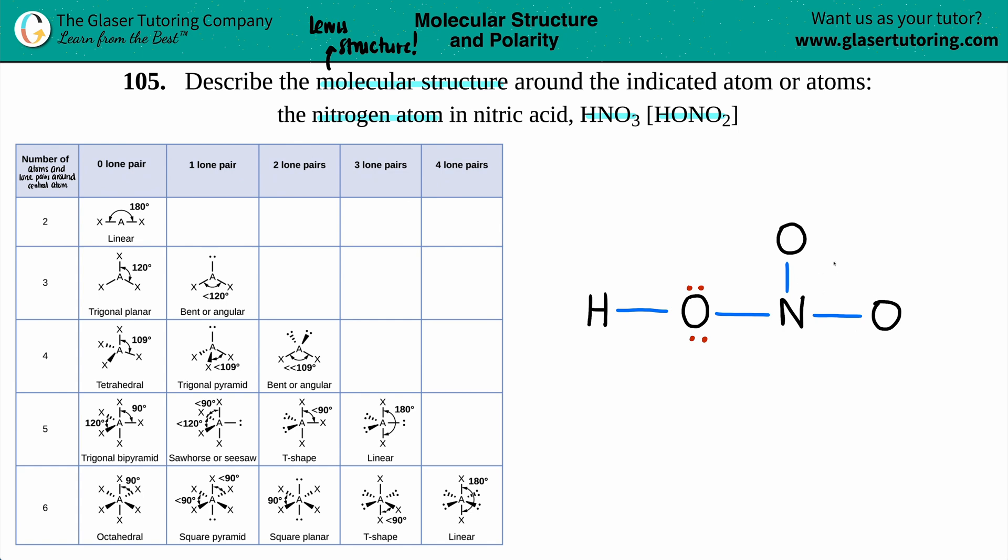So now we just have to do it again for the other ones. Now, one of them, to get that octet, we have to give a double bond because oxygen has six valence electrons. So one, two, and then three, four, five, six. And because of that, there's your octet. So maybe I'll just draw it like this.